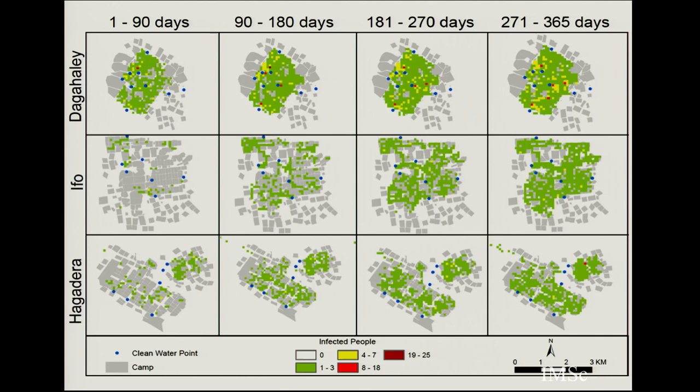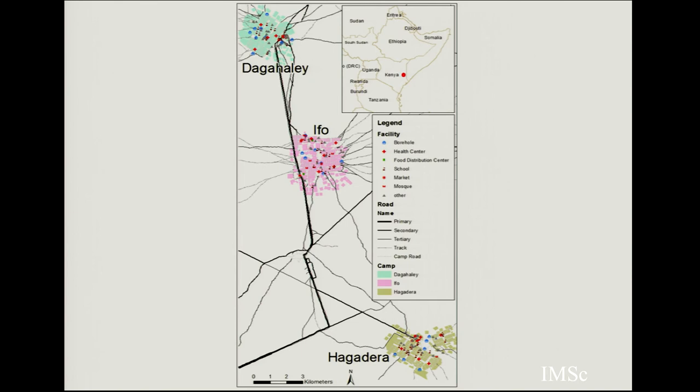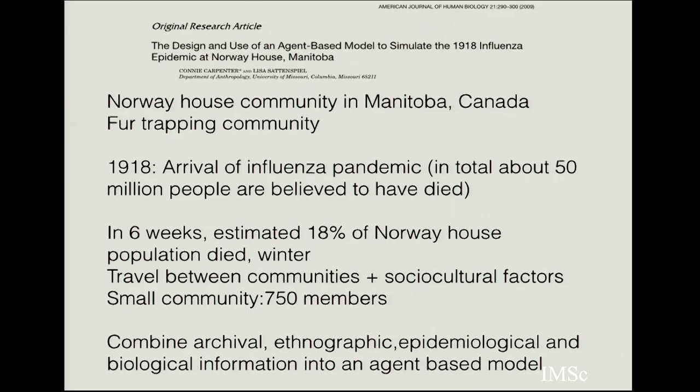Using these models, you can try out different base population structures and locations to see what actually happens. This is a spatial computation since the model tracks who interacts with whom among the agents. Across three different camps — Hagadaira, IFO, and Dagahaley — the number of infected individuals at different days were reported as 0, 4 to 7, 9 to 25, which can then be compared to actual data. There is also a spatial model showing the connections between these three different locations.